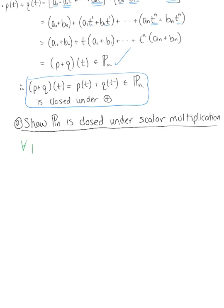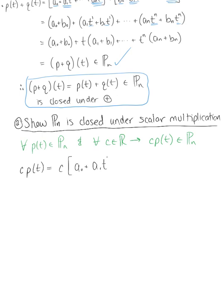In other words, for all polynomials p of t in the set of all polynomials, and for all scalars c, our goal is to show that c times p of t is also in the set of all polynomials. We start by thinking about p of t multiplied by scalar c. So this is c multiplied by a naught plus a sub 1 times t to the first, continuing all the way to the nth term. By the distributive property, we distribute c through to each term: c times a naught, plus c times a sub 1 times t to the first, all the way up to c times a sub n times t to the n.